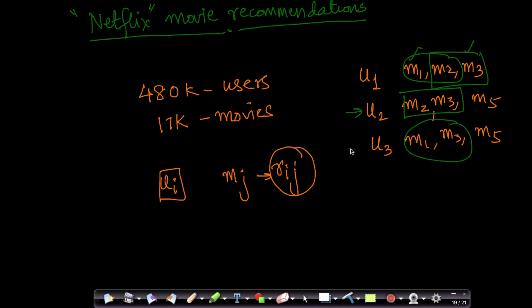Because user 2 and user 3 have roughly similar taste as u1, and since user 1 hasn't yet watched movie 5, there's a very high chance that if I recommend movie 5 to user 1, he would like it.